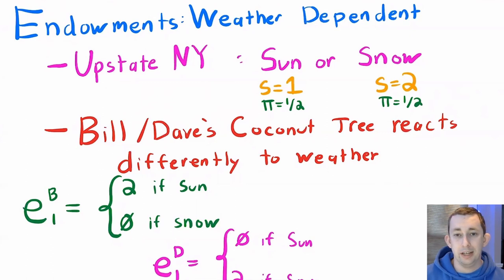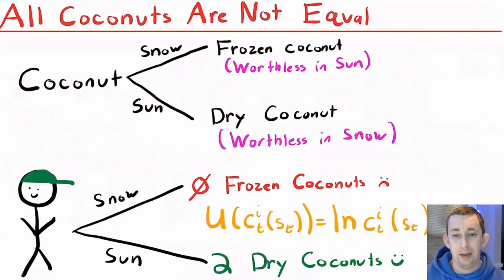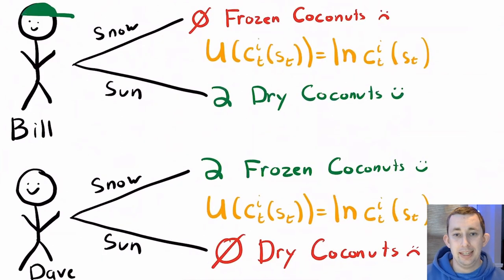On any given day, it could either be sunny or snowy with a 50% probability of each type of weather. We know from that previous video that even though we're just talking about coconuts, all coconuts are not equal. If we've got a frozen coconut, it's worthless in the sun, and if we've got a dry coconut, it's worthless in the snow. So we talked in detail about what that means for both Bill and Dave.